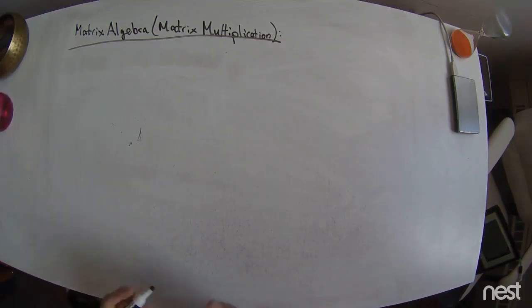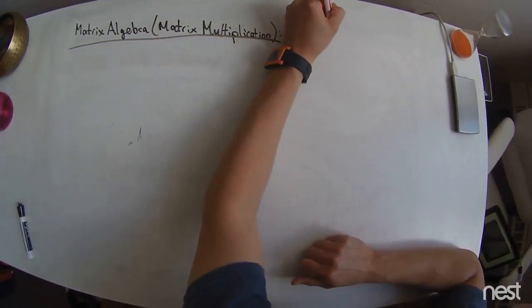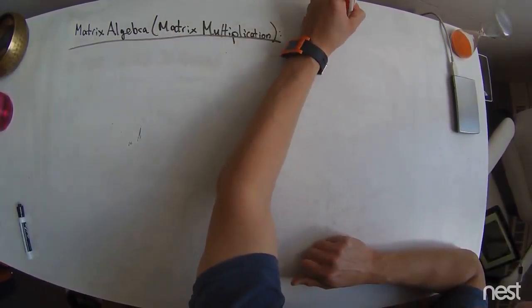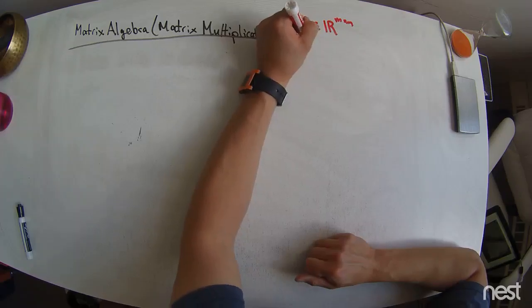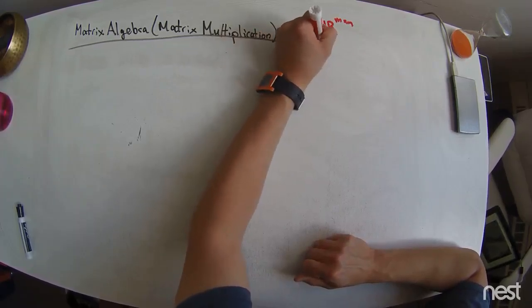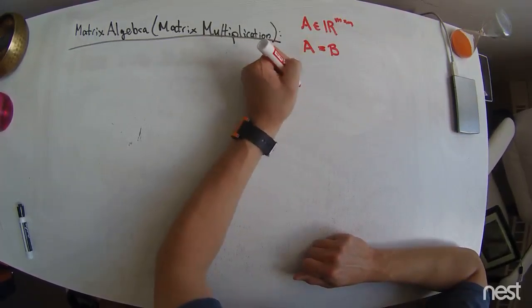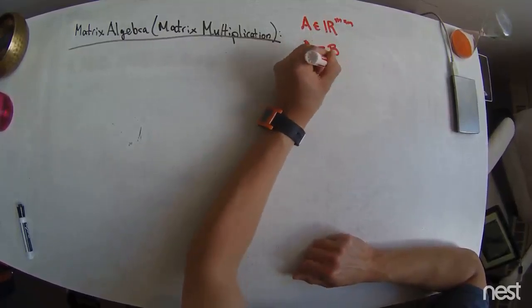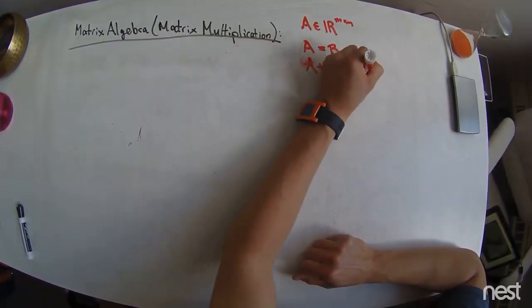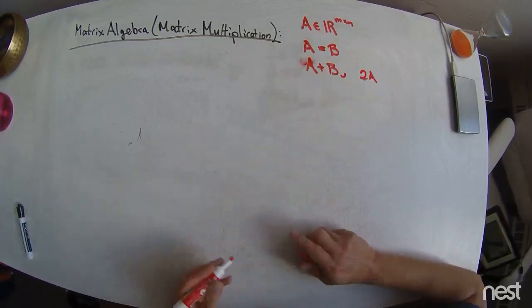So in the previous talk, what we defined was this matrix A, which could have maybe M rows by N columns, and then we defined what it meant for an A matrix to be equal to a B matrix, or what would happen if you took an A matrix and add it to a B matrix, or you took a scalar 2 times an A matrix.